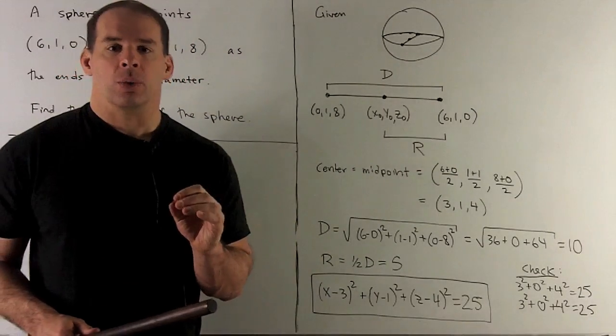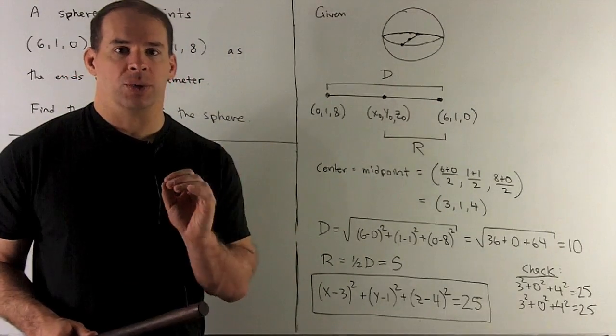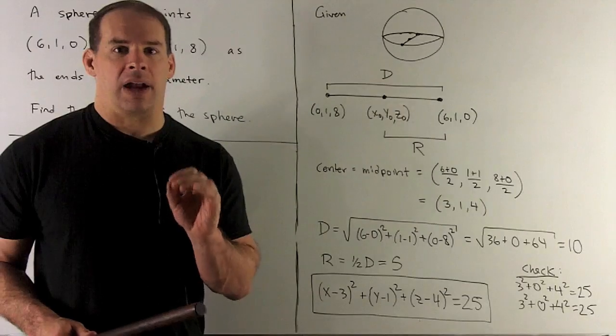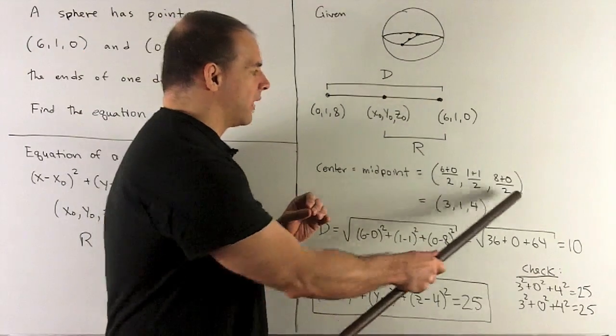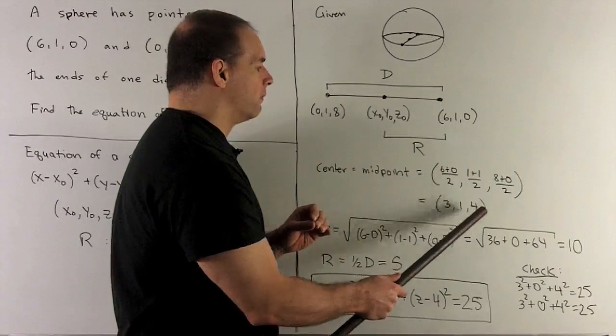Now, for the center, we're just going to take the midpoint between our two points. So to get that, I add coordinate-wise, divide by 2. So when we do that, we get (3, 1, 4).